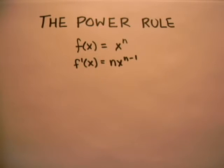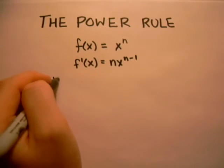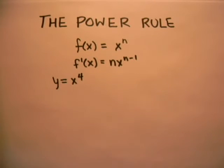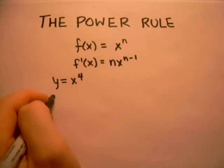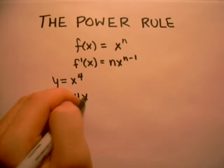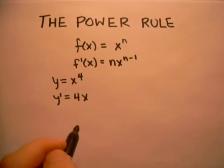Let's do an example. If we had y equals x to the fourth, then all we would have to do to get y prime would be to bring the four down in front of the x and then subtract one from four in the exponent.